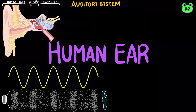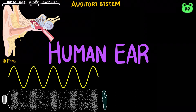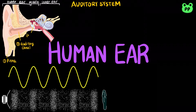Vibrating objects create pressure waves in the air that reach the pinna of the outer ear and travel down the auditory canal, causing the tympanic membrane to vibrate.